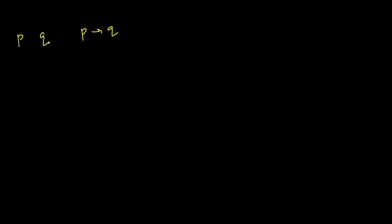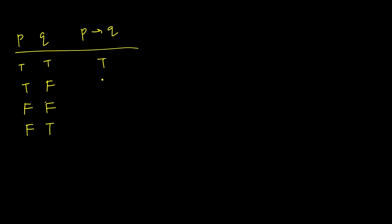The conditional is P implies Q. Writing all possible values of P and Q: when P is true and Q is true, P implies Q is true. When P is true and Q is false, it is false. When P is false and Q is true, it is true. When P is false and Q is false, it is also true. So when P is true, Q has to be true; but when P is false, Q can be true or false.